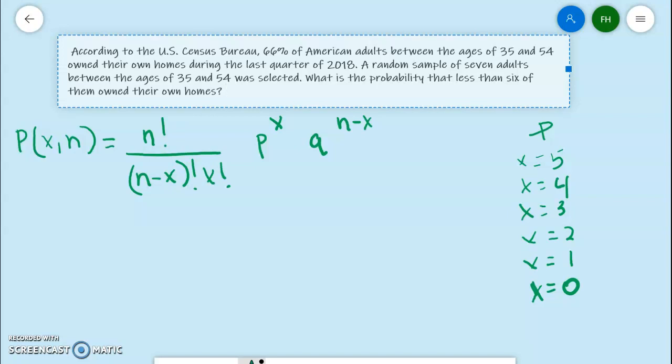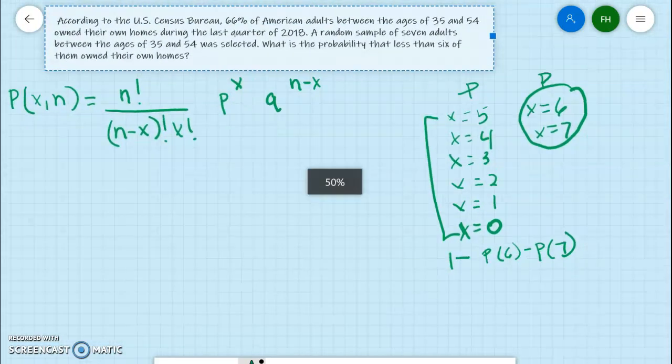So this is where you want to use the complement rule. We could find the probability that X is 6 and X is 7, because there's only seven adults in this sample. We know all these probabilities add up to 1, so we could take 1 minus the probability of X being 6 and minus the probability of X being 7. So instead of having to do this formula six times, I could do it twice, add it up, and subtract from 1. This is what we call the complement rule.